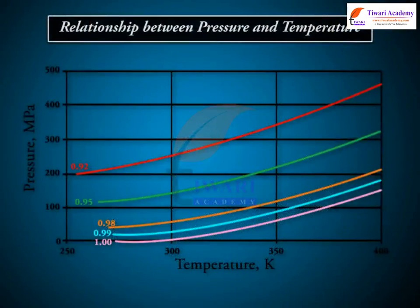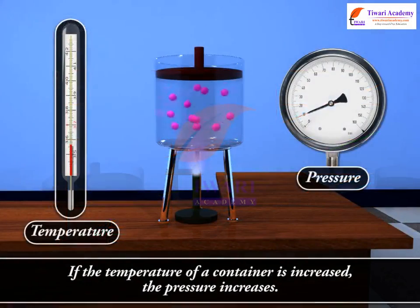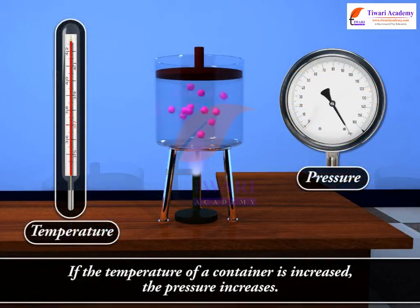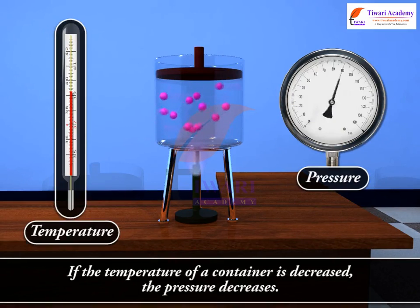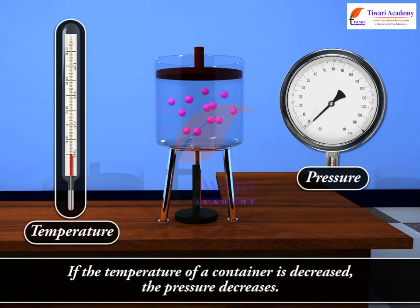Given the relationship between pressure and temperature, when volume and amount are held constant: if the temperature of a container is increased, the pressure increases. If the temperature of a container is decreased, the pressure decreases.